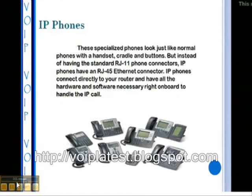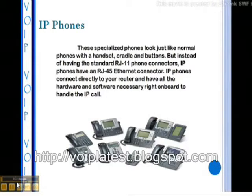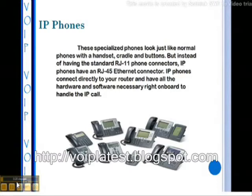IP phones look just like normal phones with a handset, cradle, and buttons. But instead of having the standard RJ11 phone connectors, IP phones have an RJ45 Ethernet connector. They connect directly to your router and have all the hardware and software necessary on board to handle the IP call.